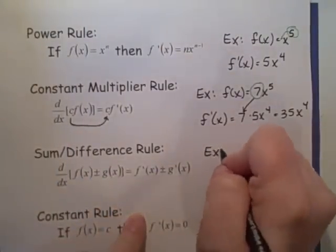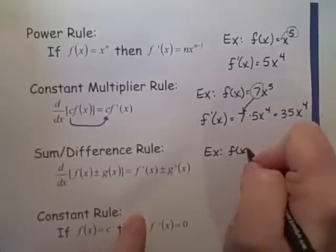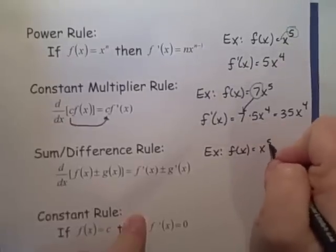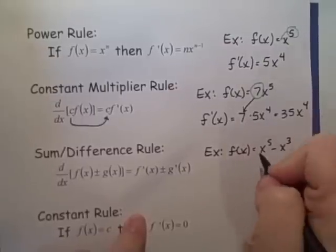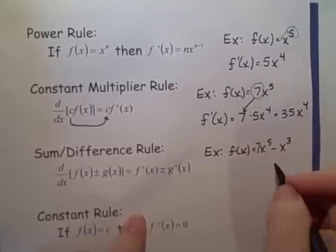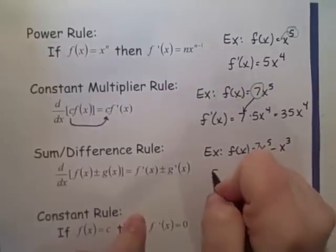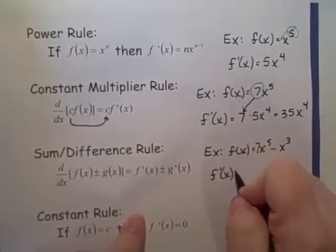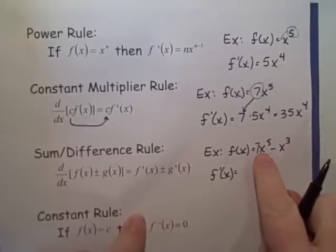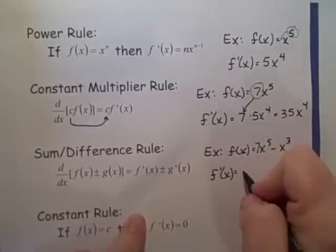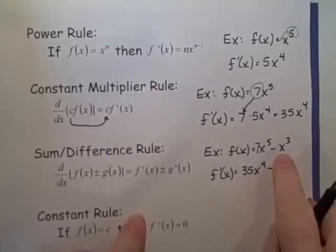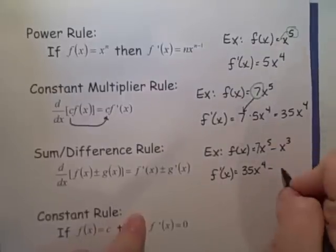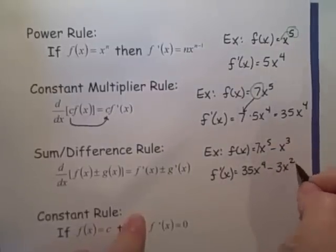So for example, if I have seven x to the fifth minus x cubed, then for my derivative we're just going to take the derivative of each term. We already found the derivative of seven x to the fifth — it was 35 x to the fourth. And then we subtract off the derivative of x cubed, which is three x squared.